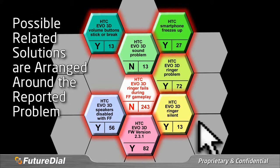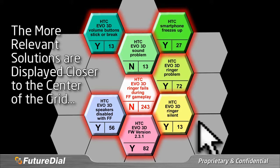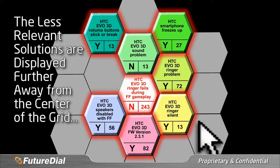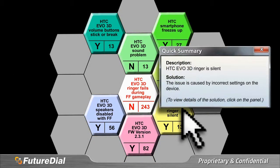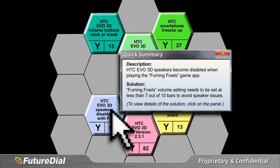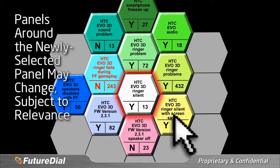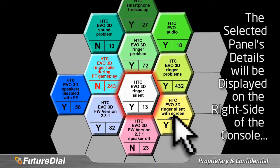Possible related solutions served up by the artificial intelligence engine are arranged around the main problem for the technician's reference. Their placement on the grid is determined by their relevance to the main problem; the more closely relevant solutions are displayed closer to the center, while the less relevant solutions are displayed further away from the center. The technician can use the PC mouse to hover over the hexagonal panels to view a pop-up summary about the problem with a little more detail about its solution. Clicking on a hexagonal panel will cause the other panels to re-center around the selected panel. The selected panel's detailed information will be displayed on the right side of the Technician's console screen.